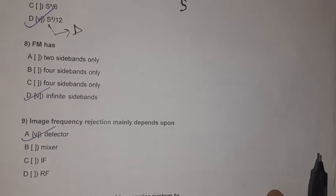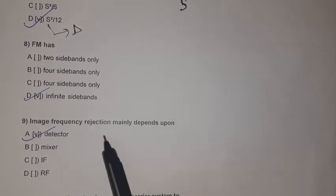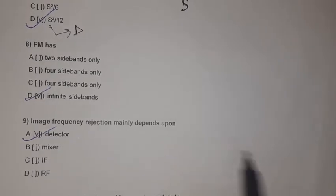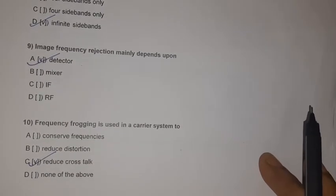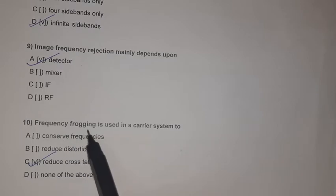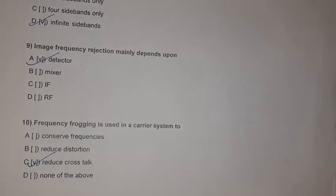Question 8: FM has infinite sidebands. Question 9: Image frequency rejection mainly depends upon the detector. Question 10: Frequency frogging is used in a carrier system to reduce crosstalk.